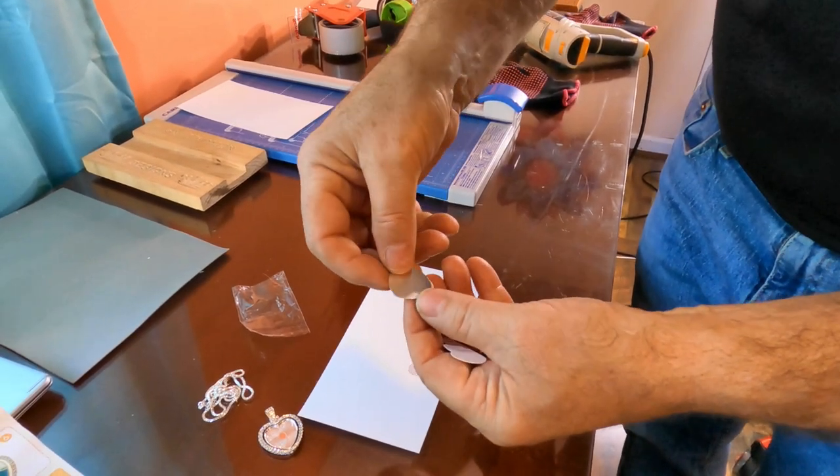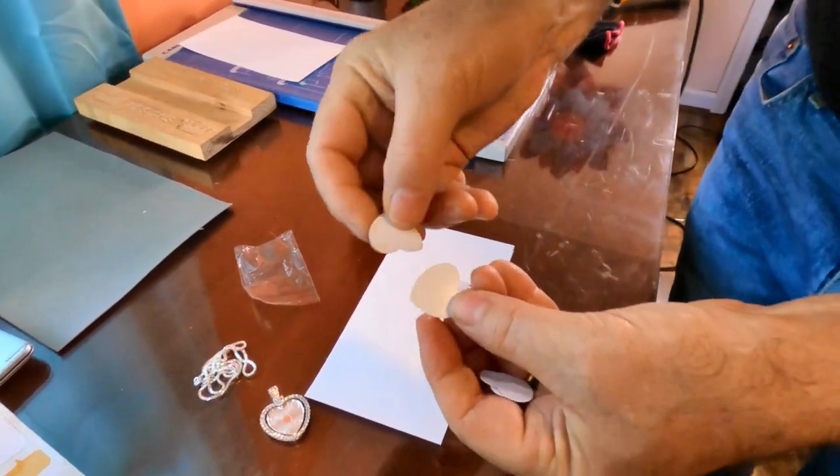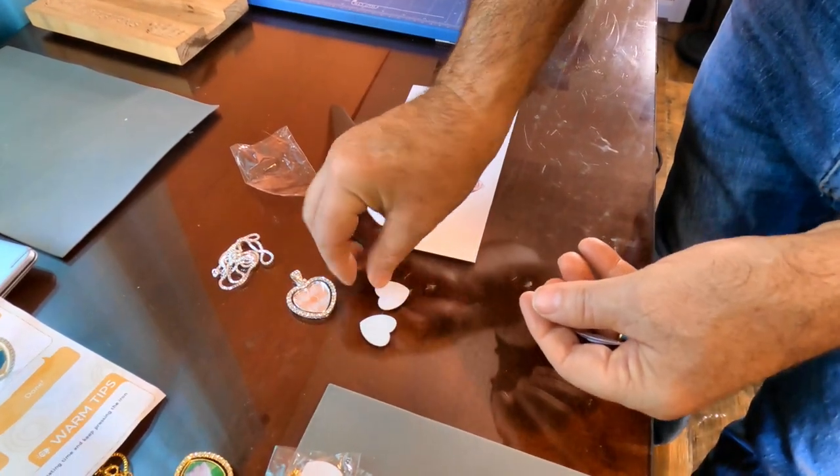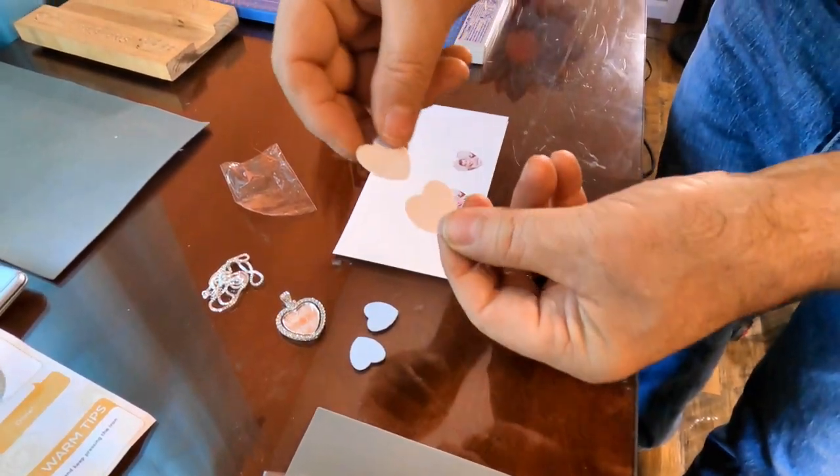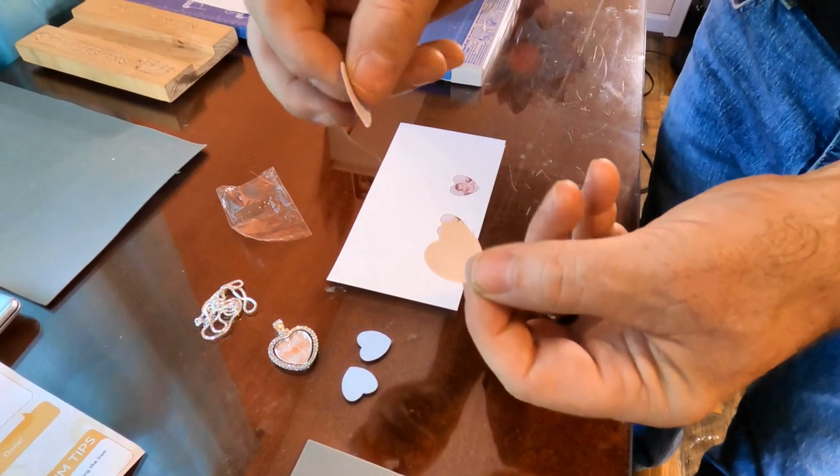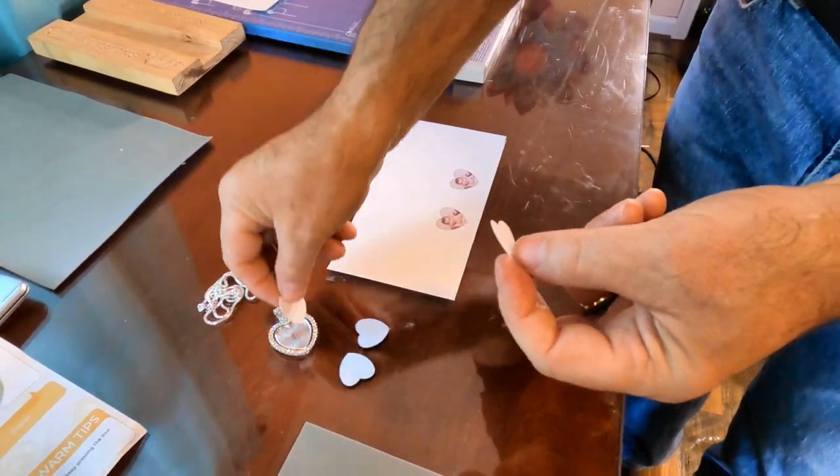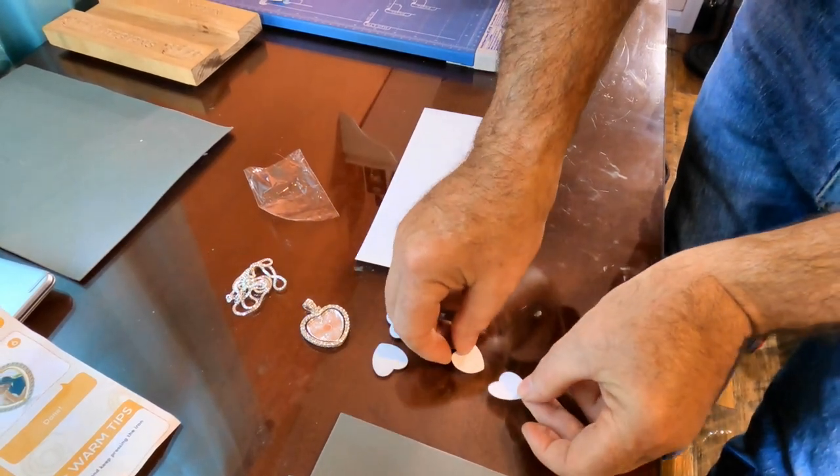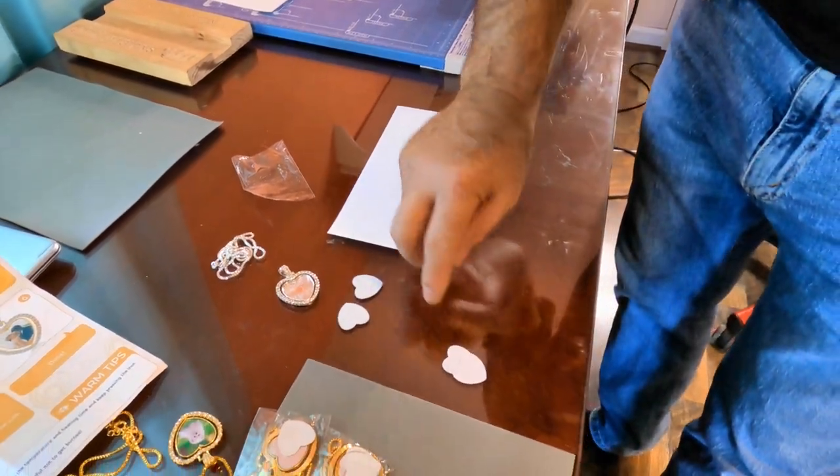You will have two metal sublimation heart blanks, and then it comes with a double-sided adhesive tape. These will go in there, then you put that on there. We'll set this tape aside for right now.